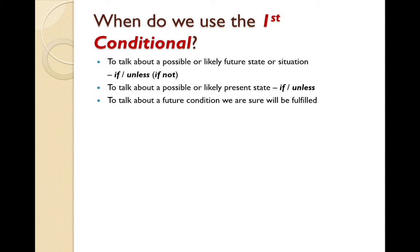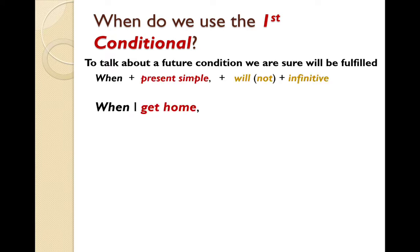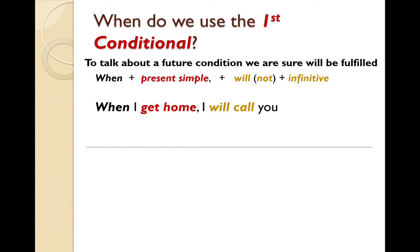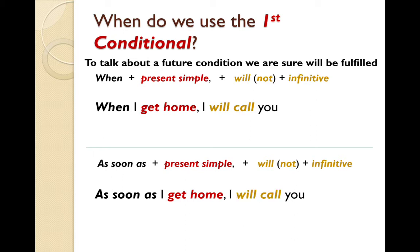We can also use the first conditional to talk about a future condition we are sure will be fulfilled. In this case, we can use 'when' or 'as soon as'. 'When I get home, I will call you.' Or: 'As soon as I get home, I will call you.' The difference is how quickly you complete the action. 'When I get home' means at some time shortly after. 'As soon as I get home' means calling you will be the very first thing I do.